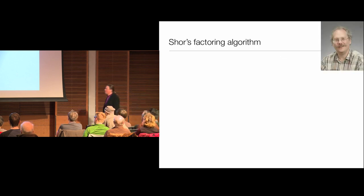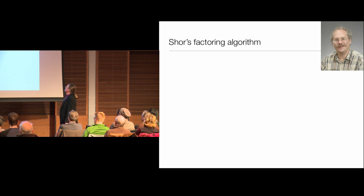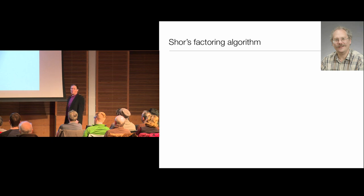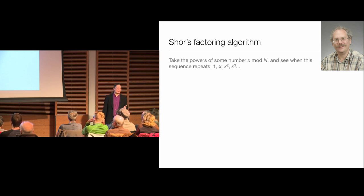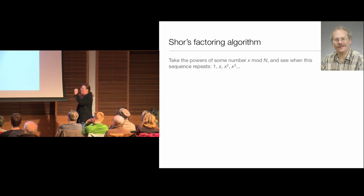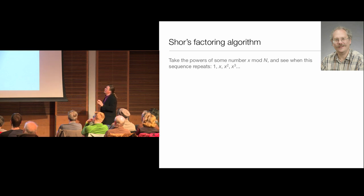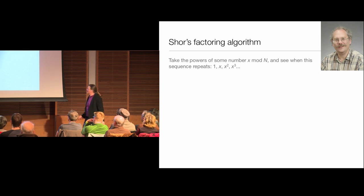In 1994, Peter Shor came up with a quantum algorithm for factoring. The idea: I want to factor a number N. I'll choose some other number x at random and look at the powers of x — 1, x, x-squared, x-cubed — all taken mod N, and ask: when does this sequence repeat? For example, to factor 15, I look at the powers of 2 mod 15: starting with 1, I double to get 2, then 4, then 8, then 16. But 16 is 1 mod 15 — so the sequence 1, 2, 4, 8 repeats every four steps.